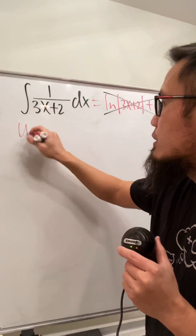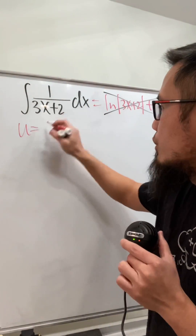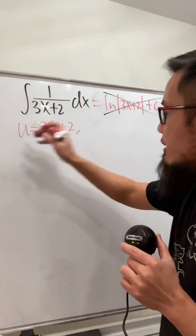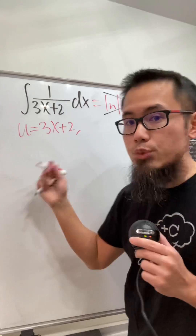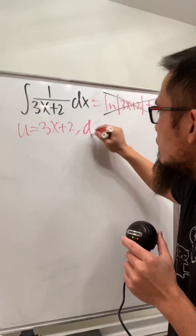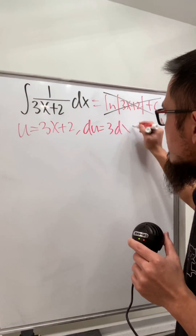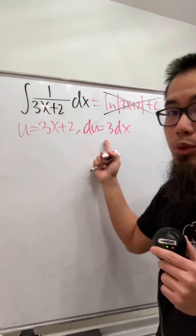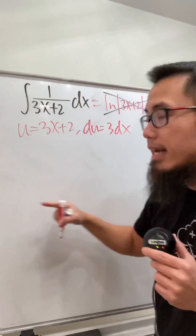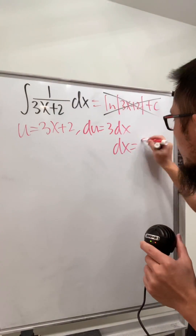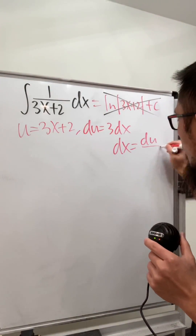We will take a u-sub real quick. Let u equal to 3x plus 2, and then differentiating both sides, we'll get du is equal to 3 dx. Now I would like to divide the 3 on both sides, so you will see that dx is equal to du over 3.